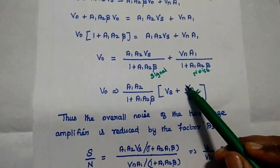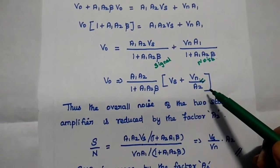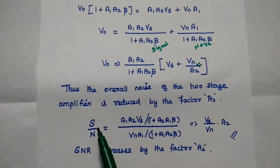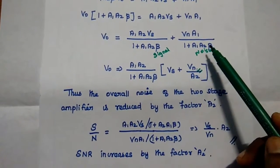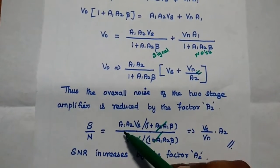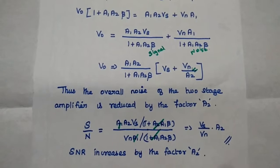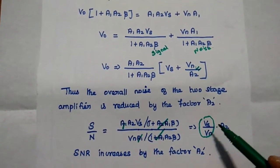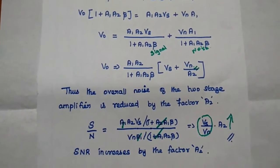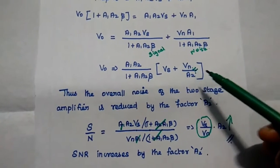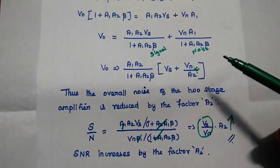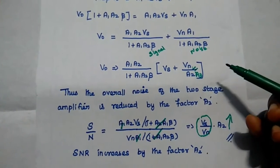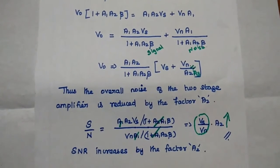The overall noise of the two-stage amplifier is reduced by the factor A2. The signal-to-noise ratio is the ratio of signal to noise: A1 cancels, giving Vs·A2 divided by Vn. So the signal-to-noise ratio is increased by the gain A2 — noise voltage is reduced and SNR is improved. By increasing the number of amplifier stages, such as a three-stage amplifier with factor A2·A3, more noise can be reduced.